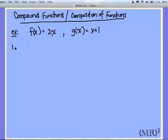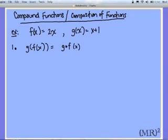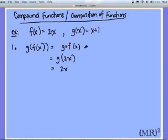Let's say bullet point 1: I want g of f of x. Another way to write that is g with a little open circle of f of x. g is defined as x plus 1 where x is my input, and f of x is 2x. So if I'm putting 2x in for f of x, my function g is defined as whatever the input is plus 1, giving me 2x plus 1 for my composition of the two functions.